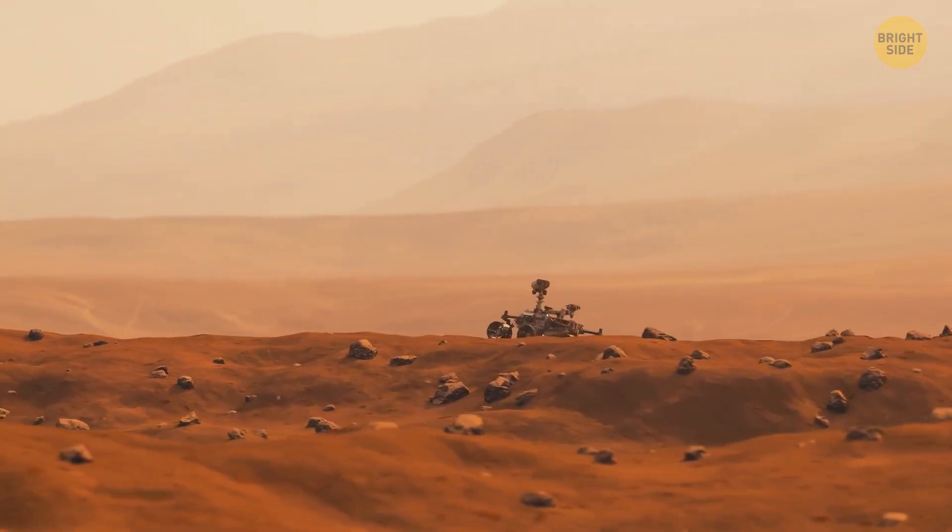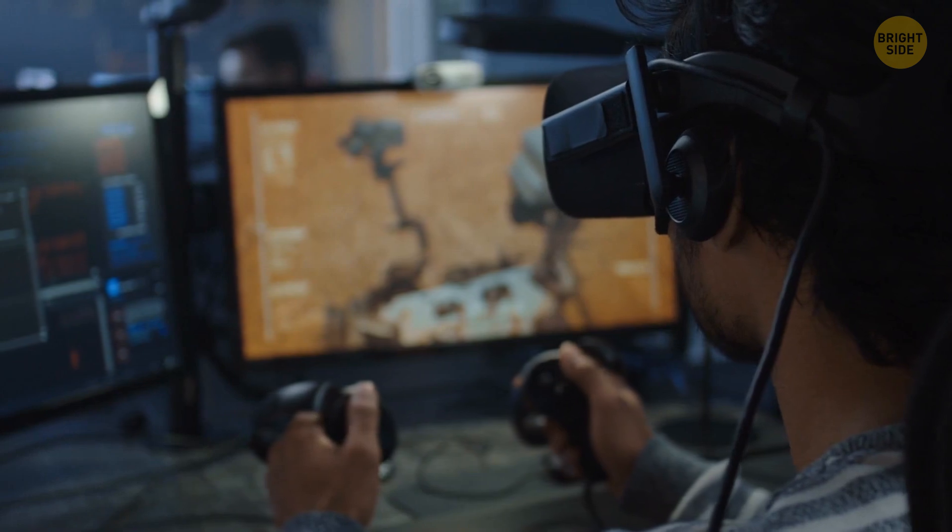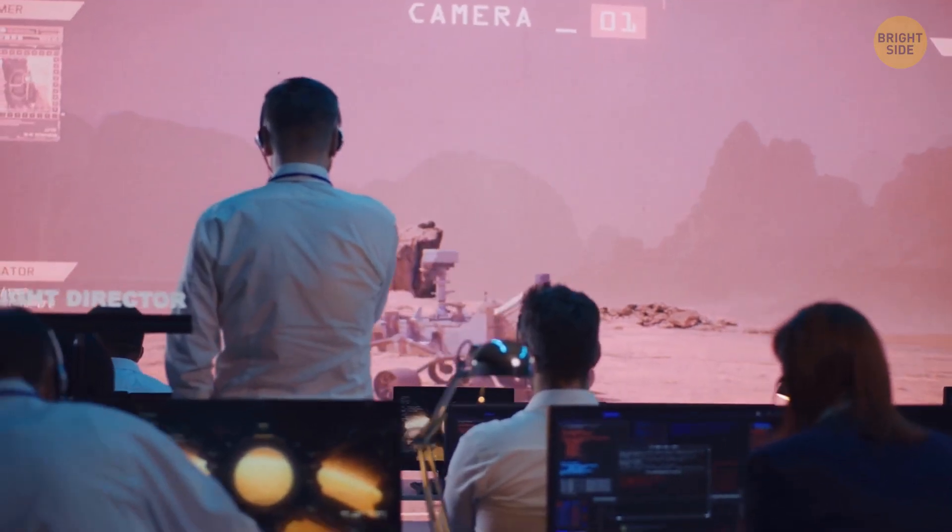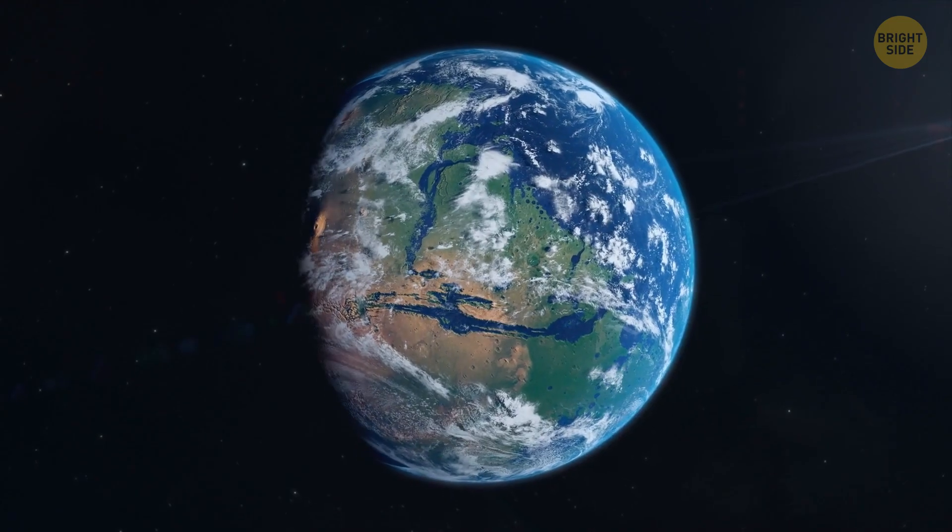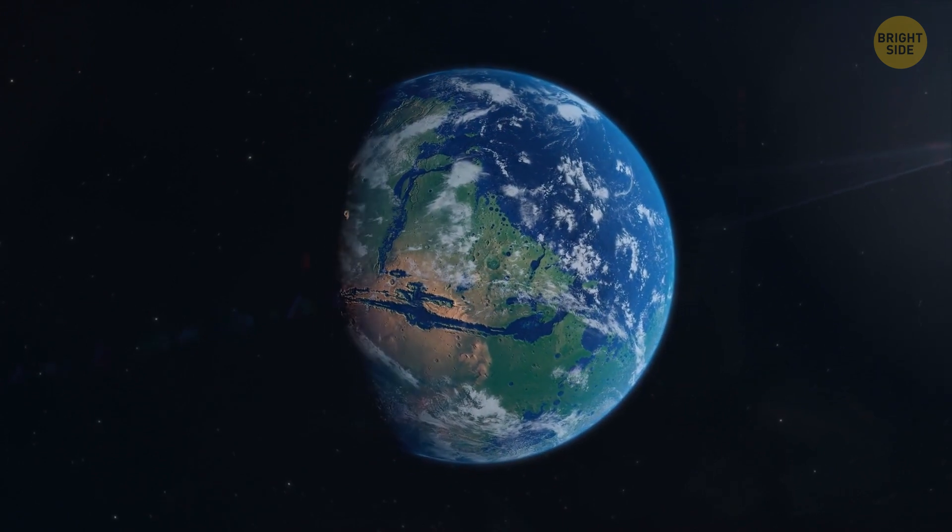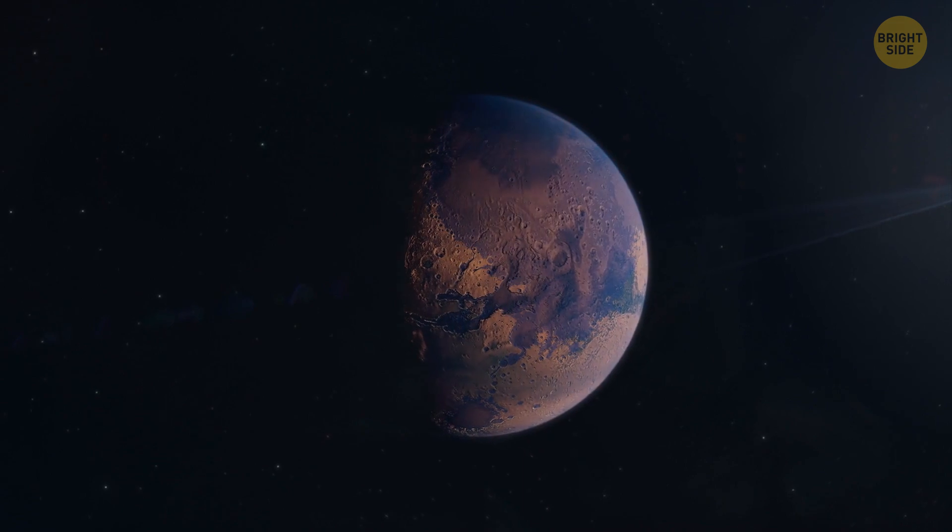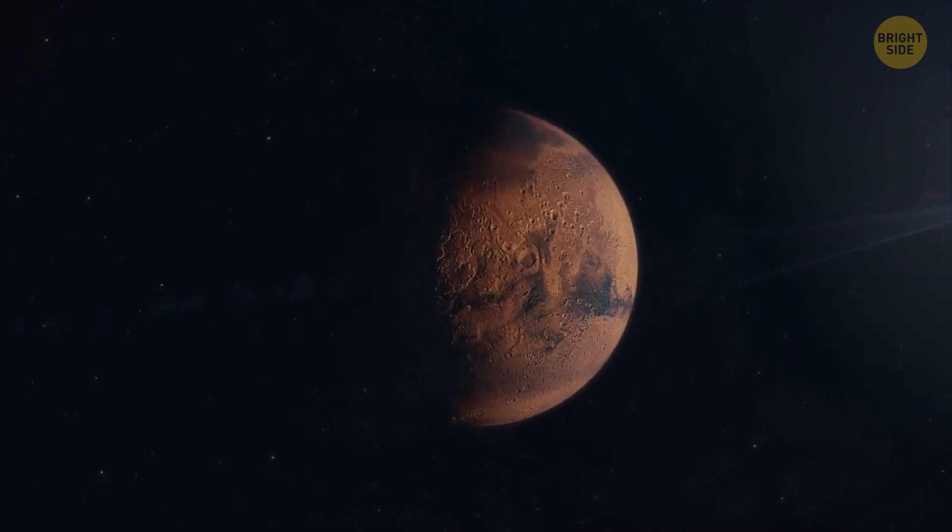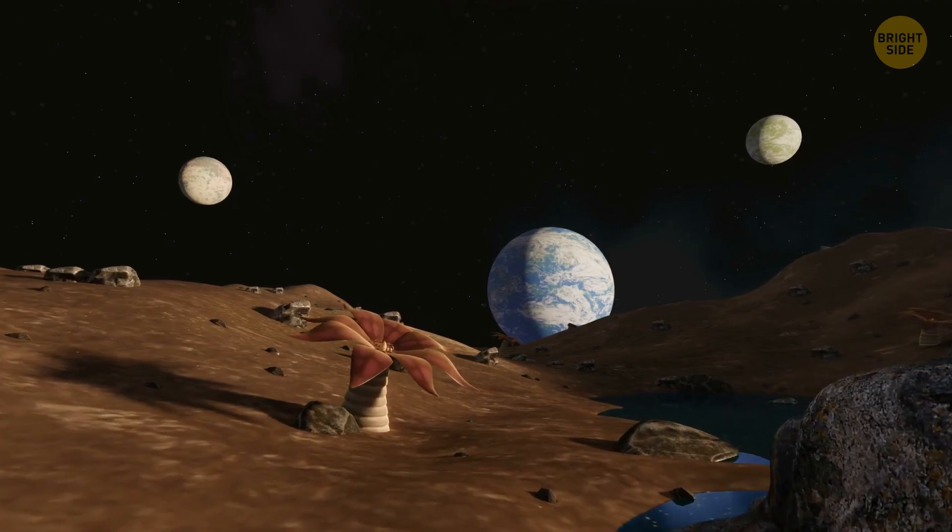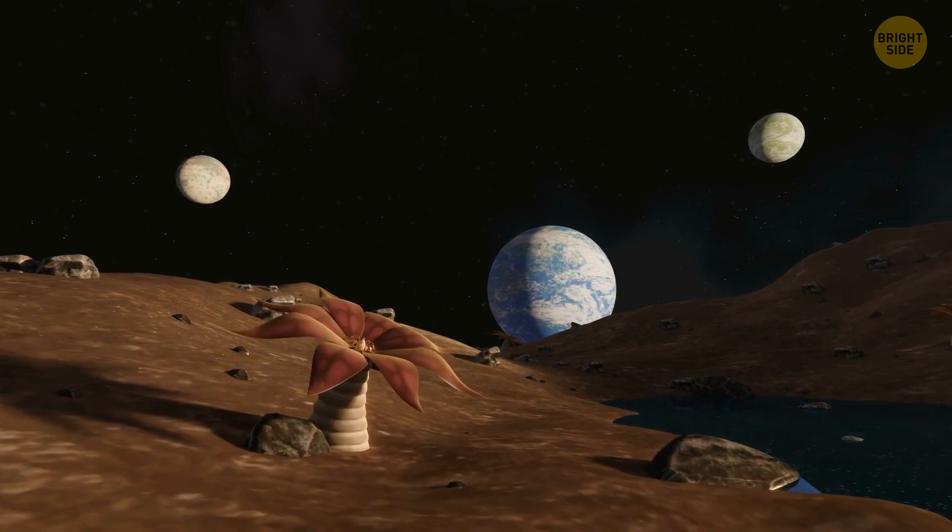For example, we've already started to find organic compounds on Mars. And there's a teeny tiny chance that Mars once flourished with plants, and maybe even animals. This is just a possibility. But if it turns out to be true, it would show that the presence of living organisms in the universe is not as rare as it seems.